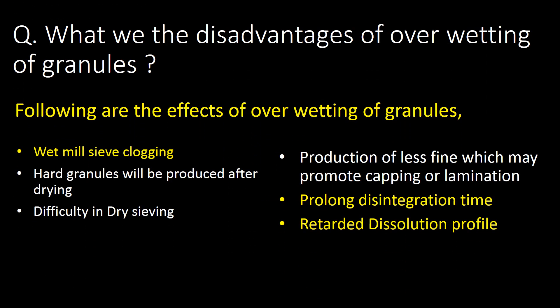What are the disadvantages of over-wetting of granules? Six major disadvantages are: first, wet mill sieve clogging; second, hard granules will be produced after drying; third, difficulty in dry sieving; fourth, production of fewer fines, which may promote capping or lamination during compression; fifth, prolonged disintegration time; and sixth, retarded dissolution profile.